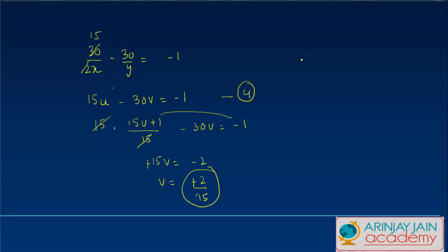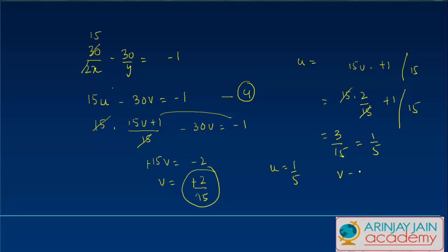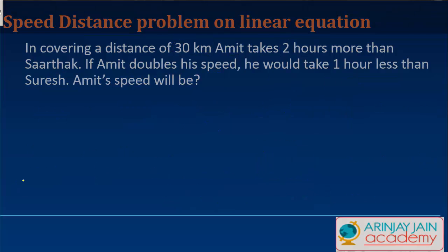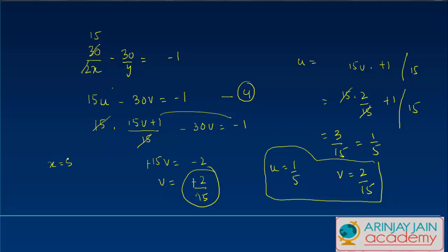Now substituting v equals 2/15 back into u equals (15v plus 1)/15: u equals (15 times 2/15 plus 1)/15 equals 3/15 equals 1/5. So u equals 1/5 and v equals 2/15. Since 1/x equals u, Amit's speed x equals 5 kilometers per hour. And since 1/y equals v, Sartak's speed y equals 15/2 kilometers per hour.